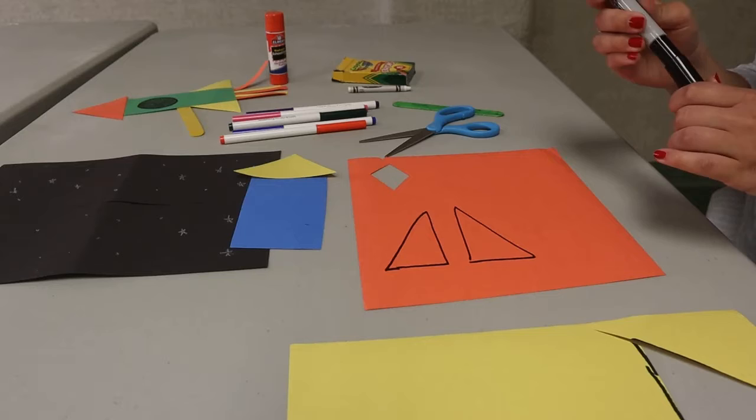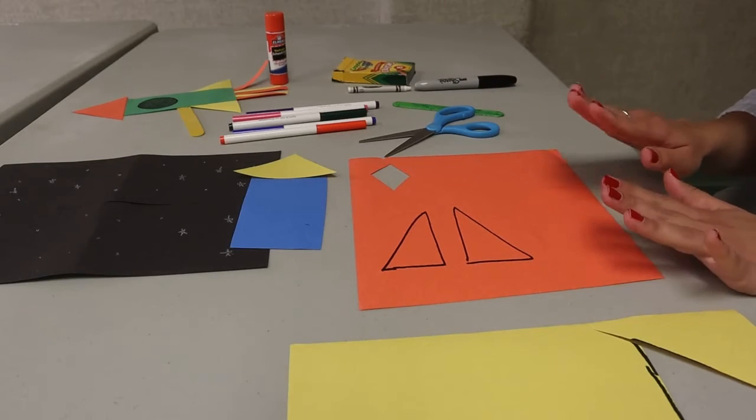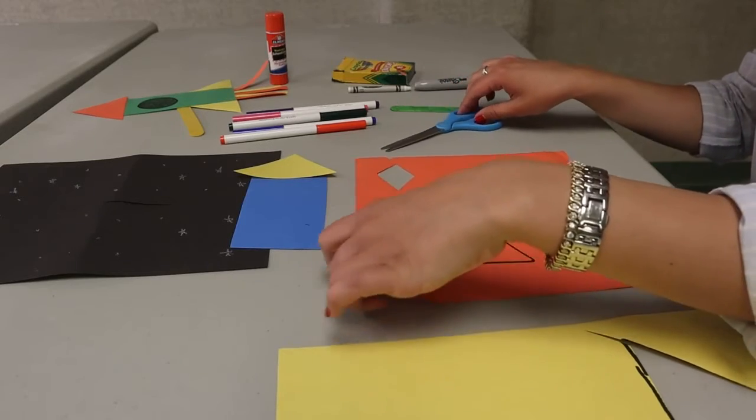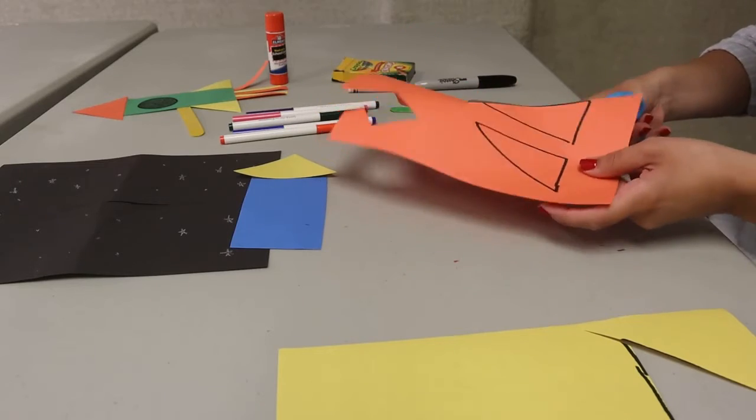Now I'm going to make the two side triangles for my spaceship. So I'm going to take a marker and I am going to cut out two more triangles. Now I do have a template of this on the website. If making the triangles and rectangles are a little difficult, that's okay. You can always copy the template from the website. So I'm going to cut these two triangles out.